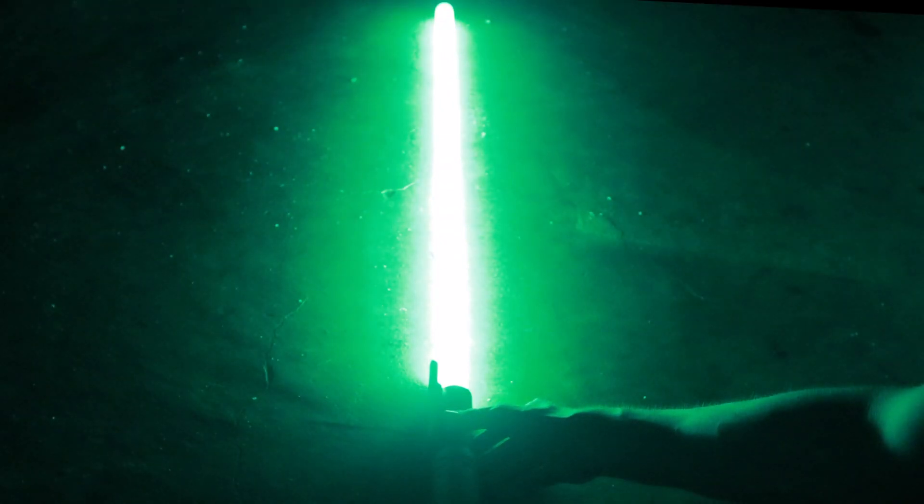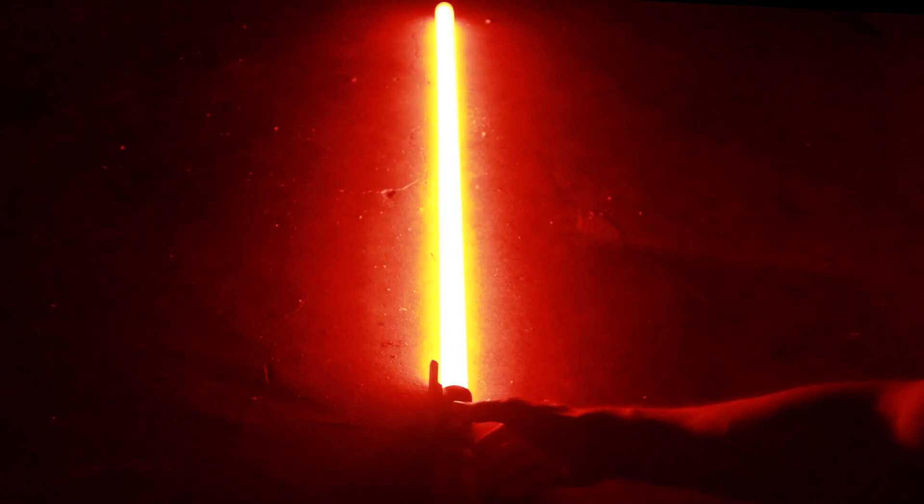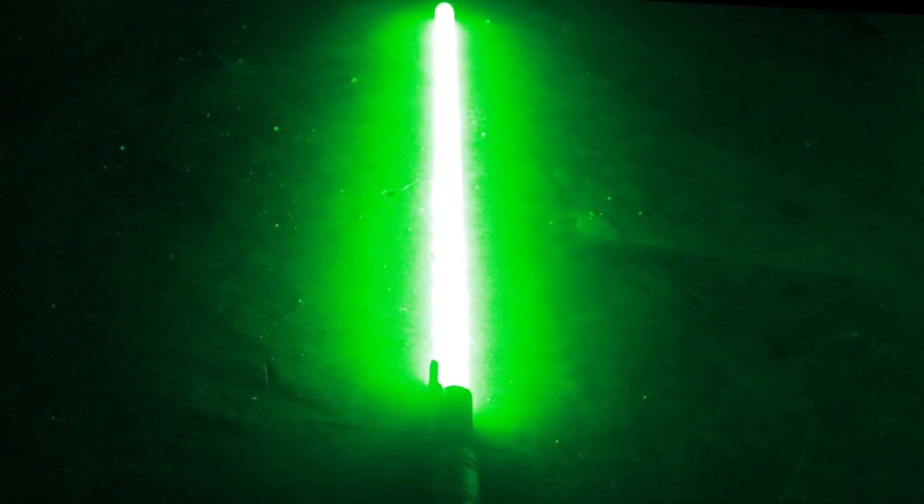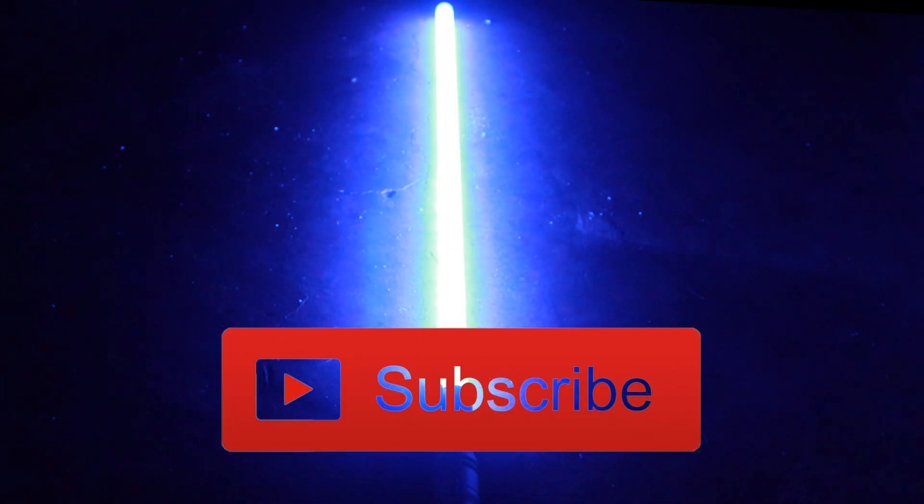Here is the finished lightsaber. If we shut down the lights, we can activate it by pressing the button and change the color to anything we want by double-clicking. It's sturdy enough to duel with, and of course, it looks absolutely stunning in darker areas. Thanks for watching, and make sure to subscribe so you don't miss future lightsaber videos.